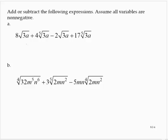Add or subtract the following expressions. Assume all variables are non-negative. 8 times the square root of 3a plus 4 times the fifth root of 3a, minus 2 times the square root of 3a plus 17 times the fifth root of 3a.